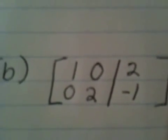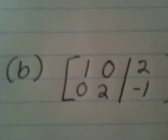In our second matrix, B, we have 1, 0, 2 in the top row and 0, 2, negative 1 in the bottom row. In the top row we have 1 as our first non-zero number, but in the bottom row we have 2 as our first non-zero number. So this is not a matrix in reduced row-echelon form.